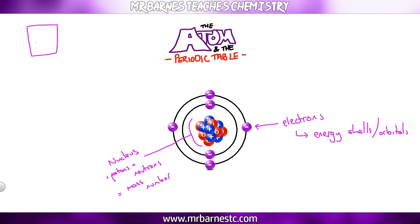On your periodic table you will have two numbers — for example, 12 and 6 for carbon. That number at the top, the big number, is the mass number, so that is the number of protons and neutrons. Some periodic tables will have that number the other way around, but for the GCSE in the UK the big number should always be up at the top.